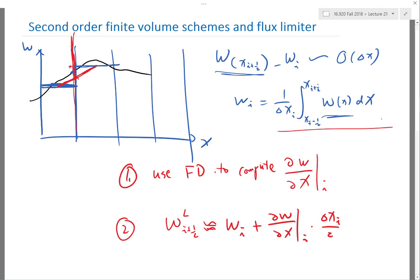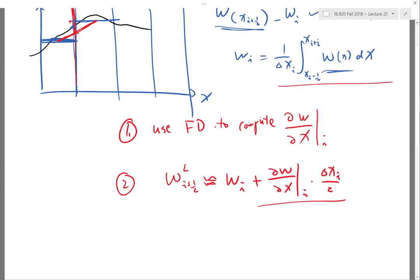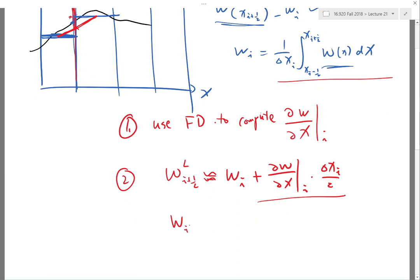From the Taylor series expansion, you can work out that this term actually cancels with the first order derivative term in the Taylor series analysis and makes this approximation second order. And correspondingly, W at i+1/2 right is approximated as W_i+1 minus the derivative at i+1 times delta X_i+1 divided by two.